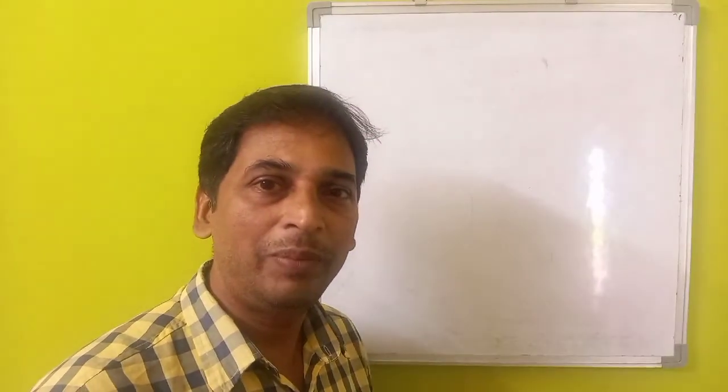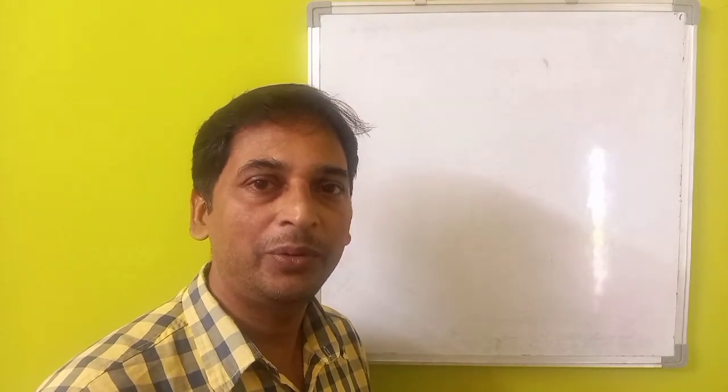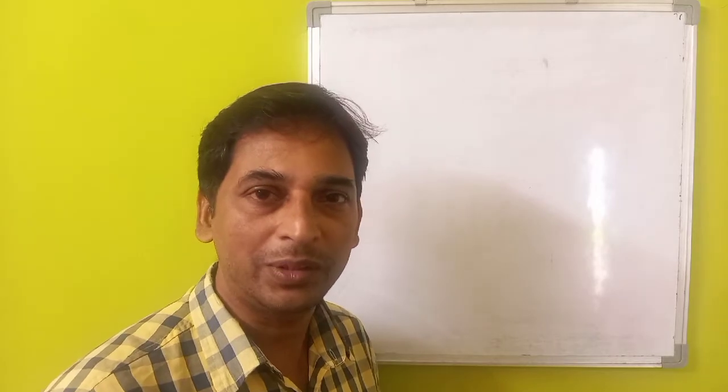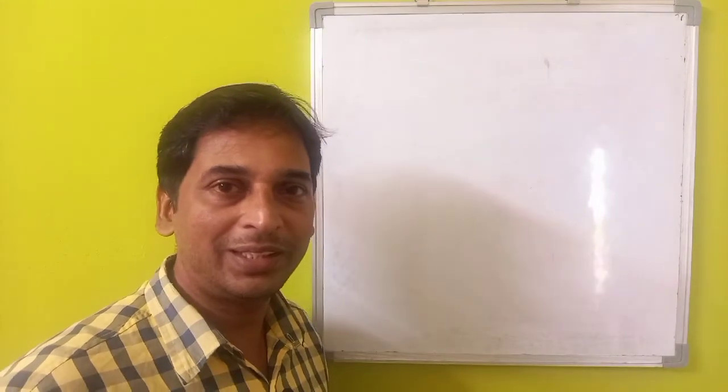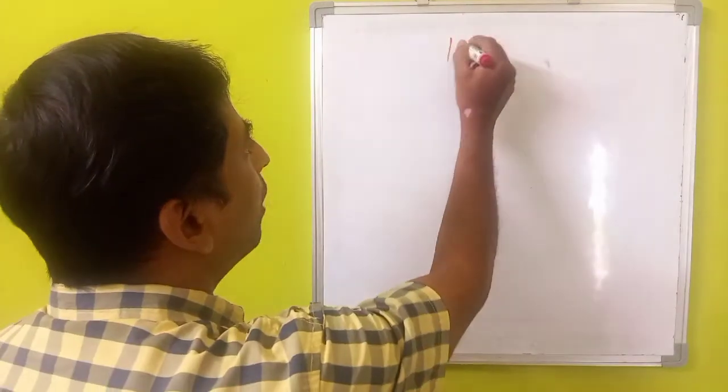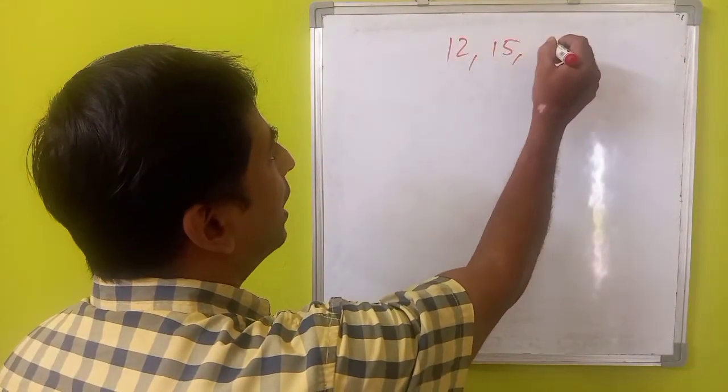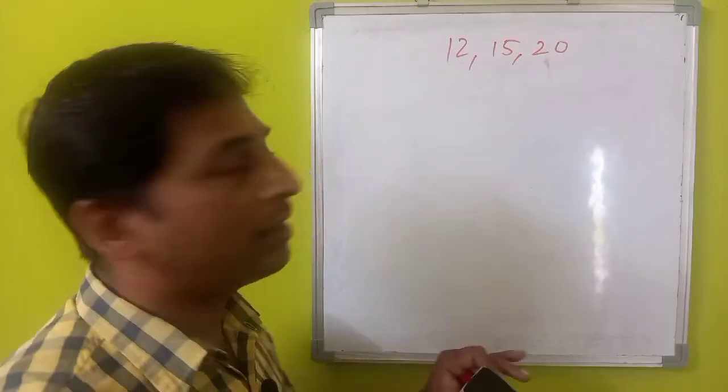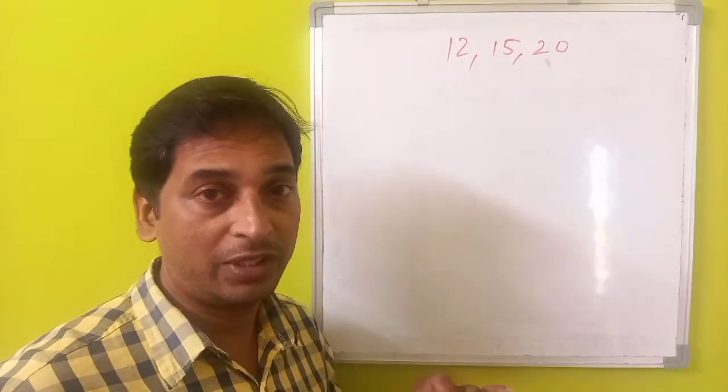In this video, we will learn a basic technique which can help you to solve many problems similar to this. We need to find the smallest number which is perfectly divisible by 12, 15 and 20 and is also a perfect square.